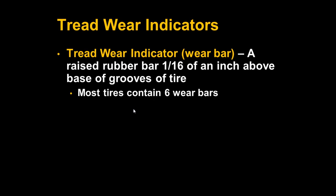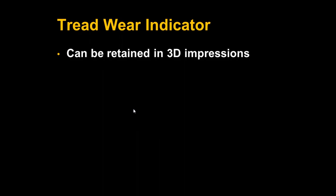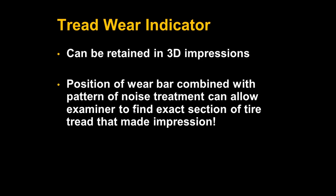When analyzing tire treads, you want to make sure you look for tread wear indicators. These indicators, called wear bars, are raised rubber bars that wear down as a tire is used. Wear bars can sometimes be seen in tire tread impressions, and when you identify the wear bar along with the noise treatment, this information can allow a forensic investigator to pinpoint the exact section of tire tread that made the impression. This can be really helpful when trying to match accident or crime scene impressions with suspect treads.